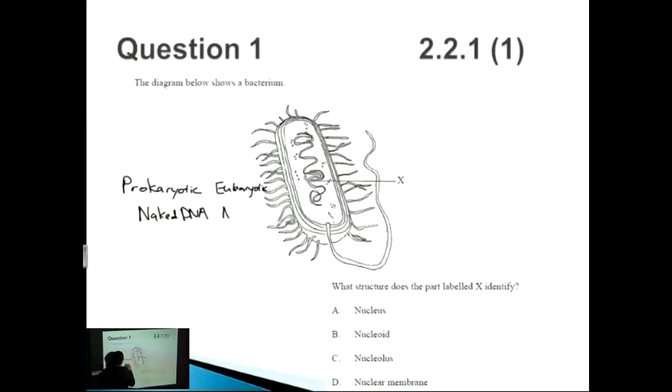Eukaryotic cells instead have a nucleus which is membrane bound, and this composes of a nucleolus as well as a nuclear membrane around it. So just based on that, relatively simple. Nucleus is eukaryotic, nucleolus is also eukaryotic, as well as nuclear membrane.